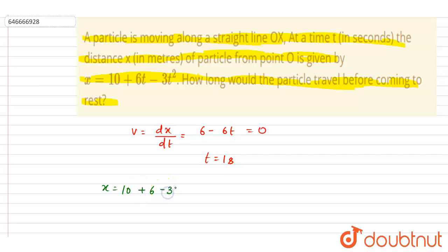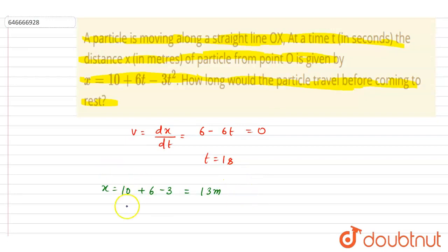Now you can just put the value of t = 1, so it will be 10 + 6 - 3(1)². If you see, 16 - 3 is 13 meters. At t = 1 second, x = 13 meters.